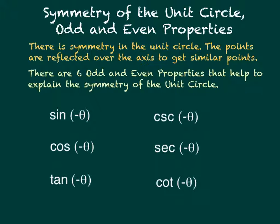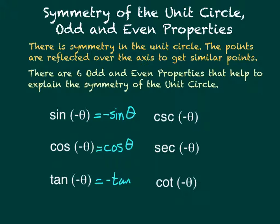The first property: sine of negative theta is equal to negative sine of theta. Cosine of negative theta is equal to cosine of theta. Tangent of negative theta is equal to negative tangent of theta.